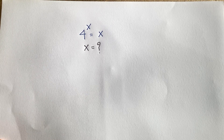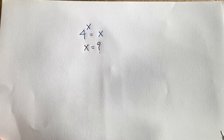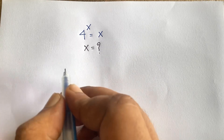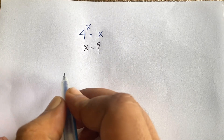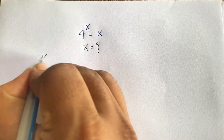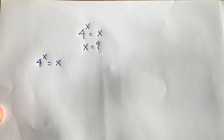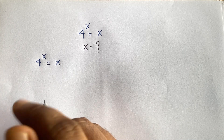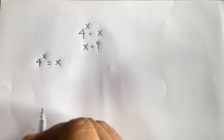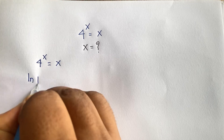Hello everyone. In this video we have solved this interesting math question: 4 to the power x is equal to x. How to solve this question? First of all, our question is 4 to the power x is equal to x. Now if I use natural log on both sides, ln of 4 to the power x is equal to ln x.